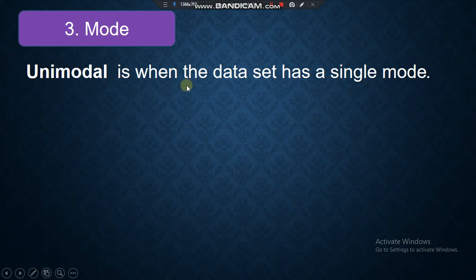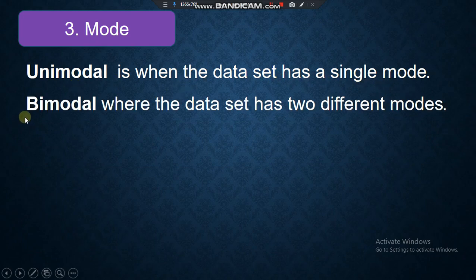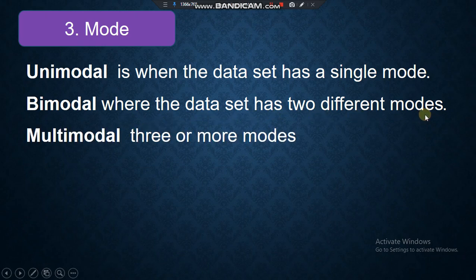Unimodal is when the data set has a single mode. Bimodal is where the data set has two different modes. Multimodal means three or more modes. So: one mode — unimodal; two modes — bimodal; many modes — multimodal.